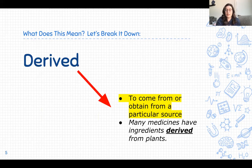This word means to come from or obtain from a particular source. An example of this vocabulary term used in a sentence: Many medicines have ingredients derived from plants. So that means that certain ingredients in medicine came from a plant. I would like you to add this vocabulary term derived. Write this word derived on your notebook page and then put the definition that's highlighted in yellow. Write that next to the term. Pause the video to do this.